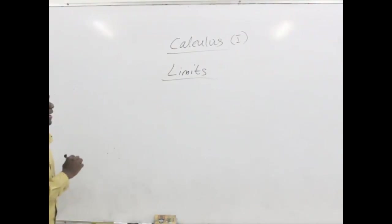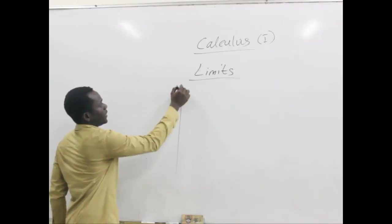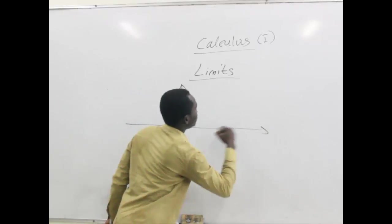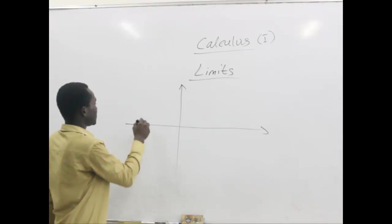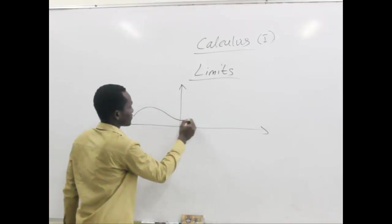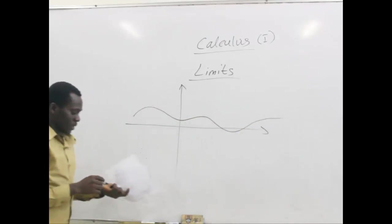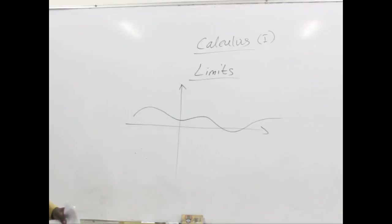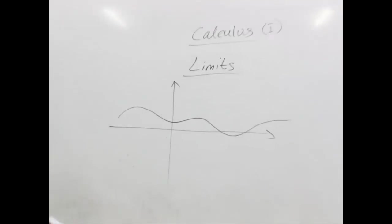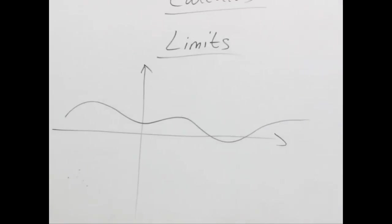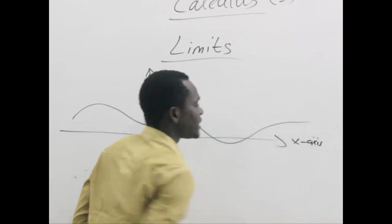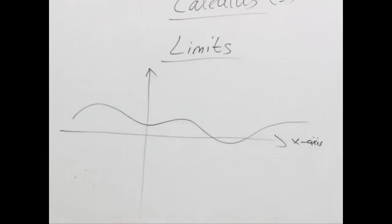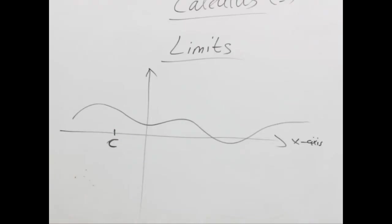Let's consider a graph on the Cartesian plane. We are going to use this graph to explain what limits are. We have the graph of a function here. Before we define limits, we need a particular value on the x-axis towards which we will be defining the limit. Assume we have a value here which is c on the x-axis.